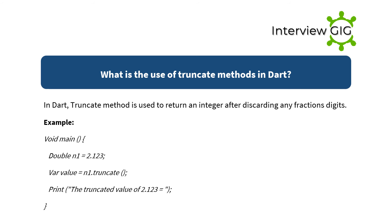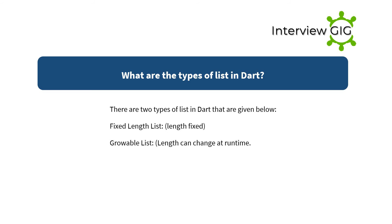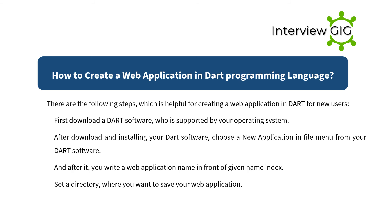What are the types of lists in Dart? There are two types of lists in Dart: fixed-length list, where the length is fixed; and growable list, where the length can change at runtime.